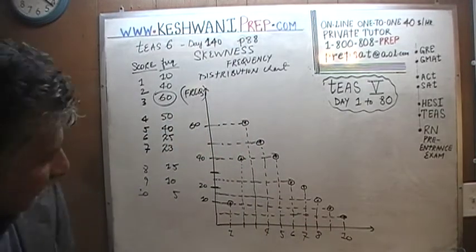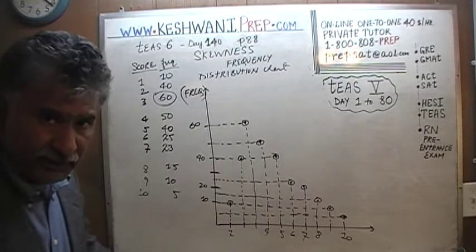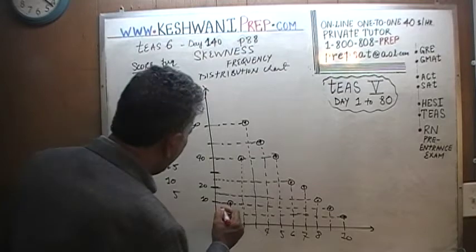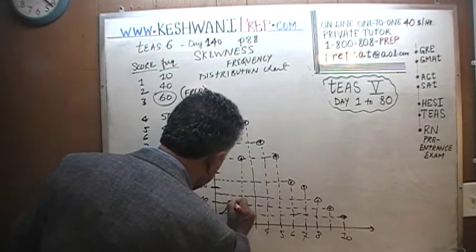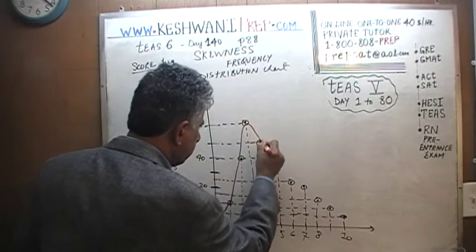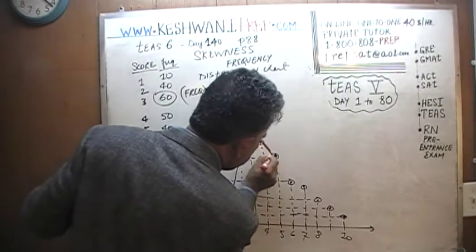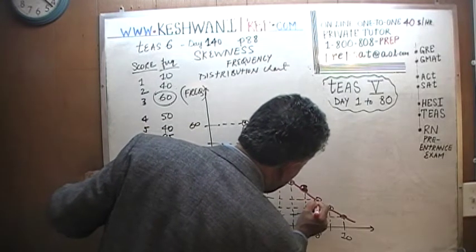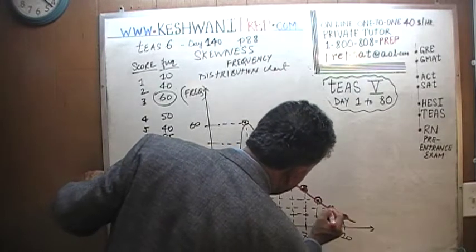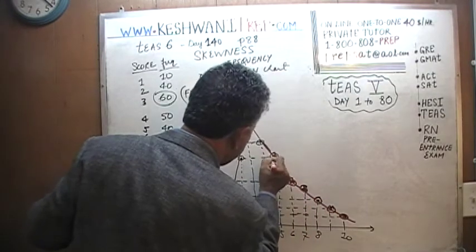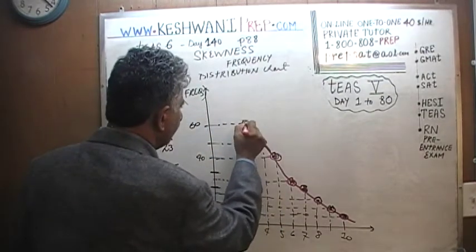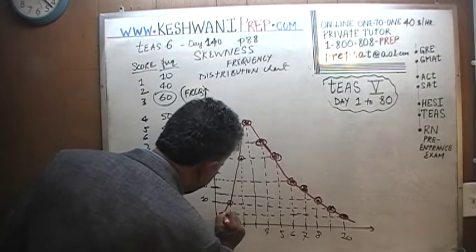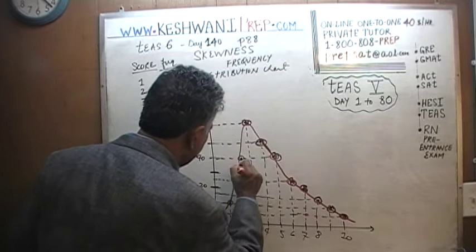Let's see what shape this takes. I'm going to do a little freehand — if I try to connect all the points exactly as they are, it's going to look awkward. What do you notice? What we notice here is that the peak of this distribution is not centered.